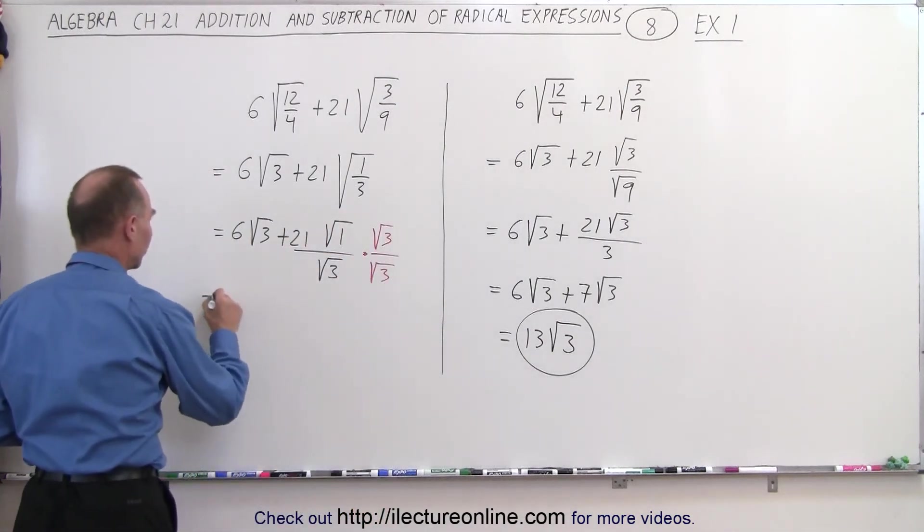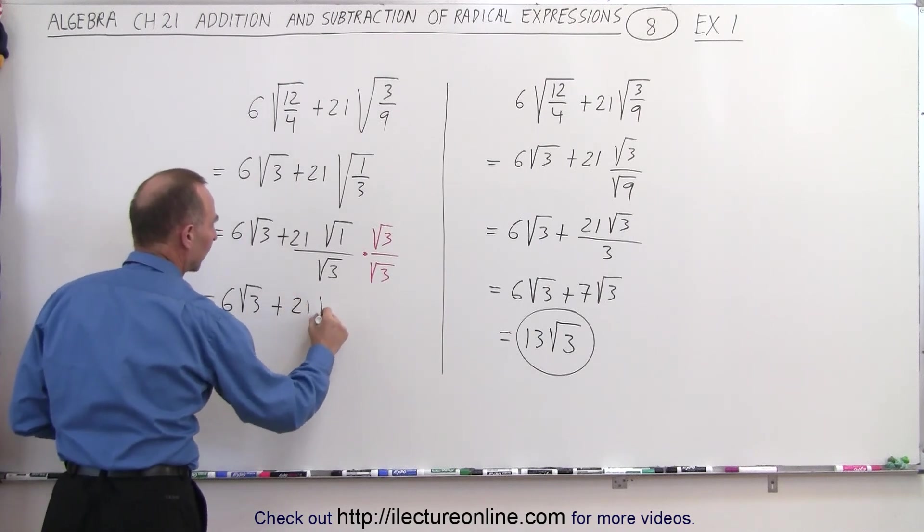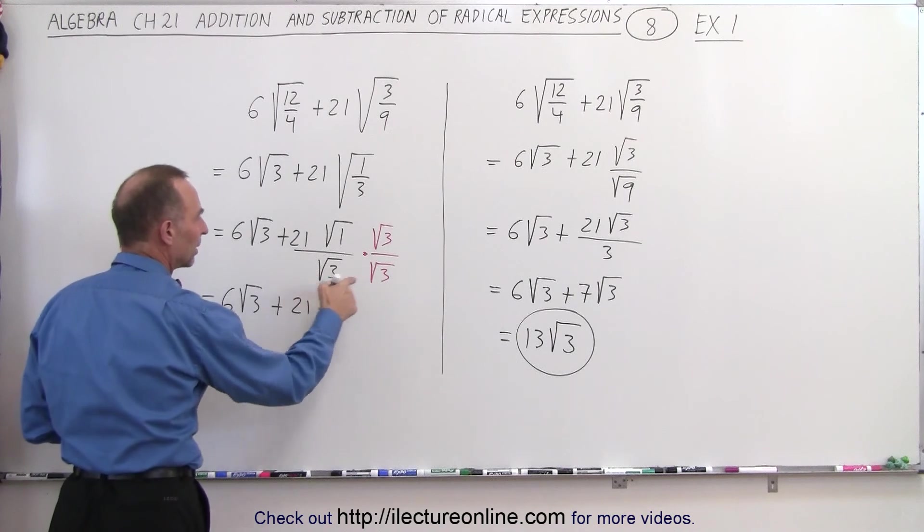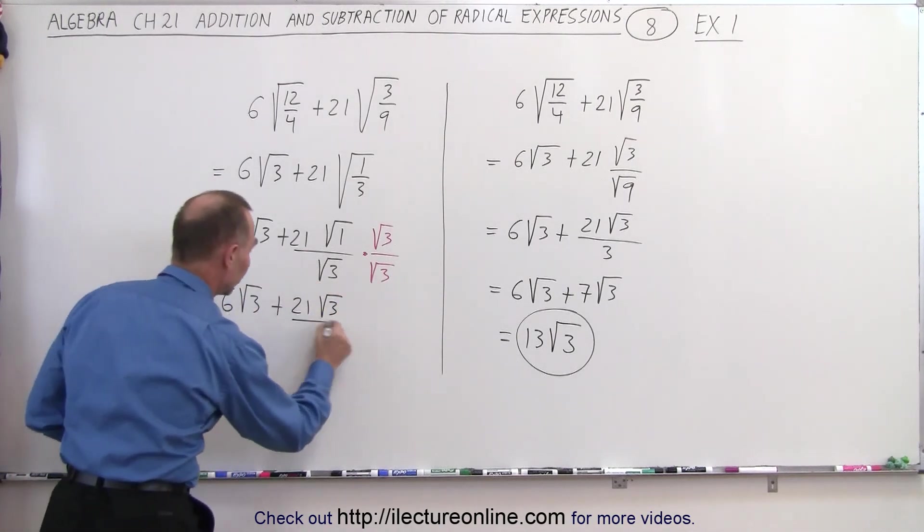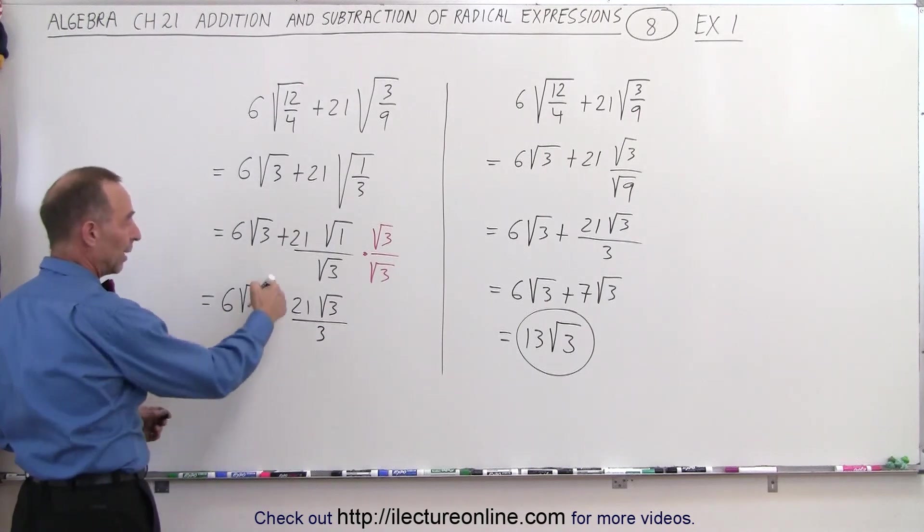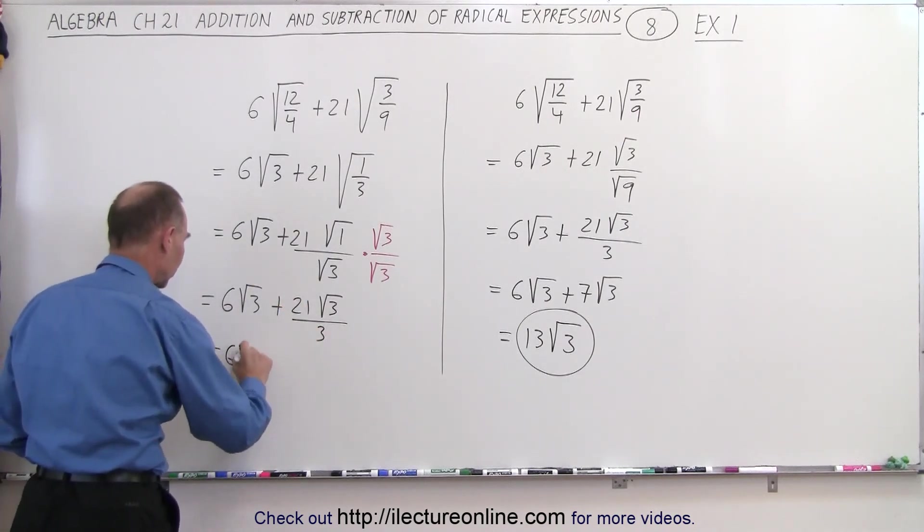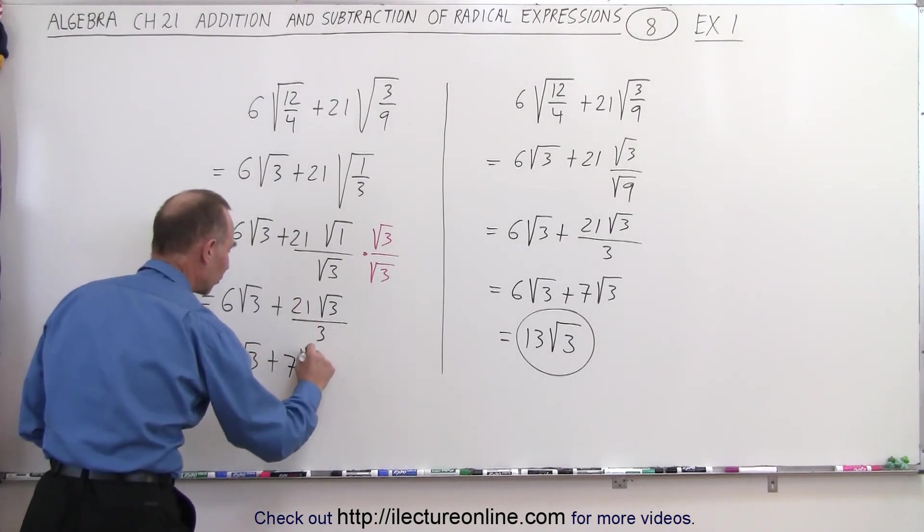And then it would look as follows: 6 times the square root of 3, plus 21 times the square root of 3 in the numerator. And the denominator, the square root of 3 times the square root of 3, is equal to simply 3. And then I can divide 21 by 3 to get 6 times the square root of 3, plus 7 times the square root of 3.